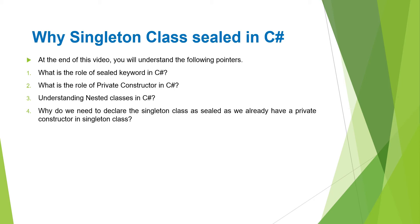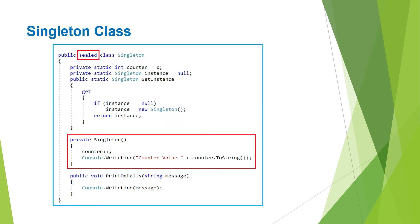You might already know we have a private constructor within the class which restricts the class for further inheritance. The most important point to keep in mind is: we need to use the singleton design pattern when we need to ensure that only one instance of a particular class is available at any given point of time for the entire application. With that in mind, let us proceed.